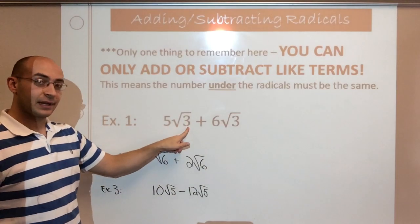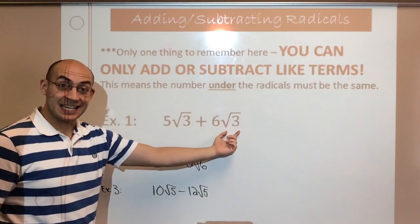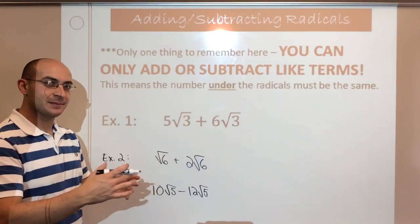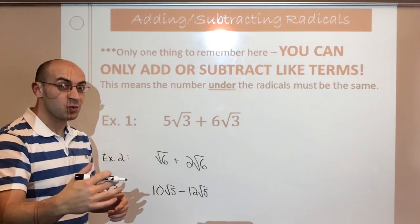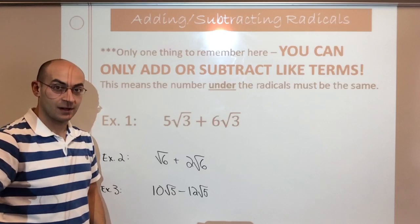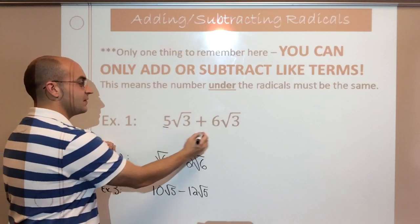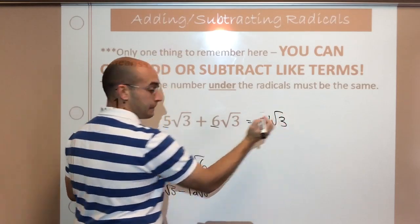Example one: five root three plus six root three. Well, the root three is what makes it like, so they are like terms. Kind of like fractions—when you add them, you don't add the denominators together. Like one over 12 plus two over 12 is not three over 24, it's just three over 12. Same thing goes here. So I'm just going to add the numbers in the front of the radical. So this is simply 11 root three.